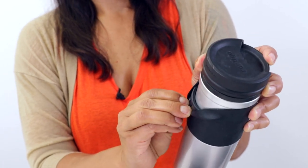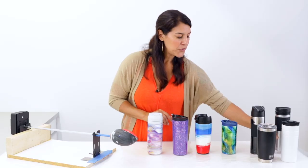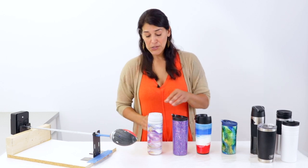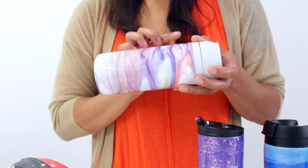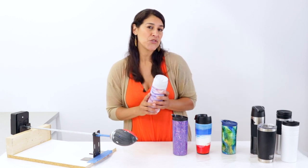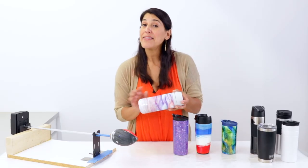No matter which technique you choose to use, an important thing to remember is only to resin the exterior of the tumbler. The reason being is that the maximum temperature that ArtResin can be exposed to is 120 degrees Fahrenheit or 50 degrees Celsius, and a freshly brewed cup of tea or coffee can easily exceed those temperatures.